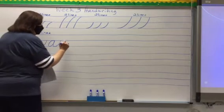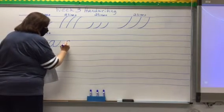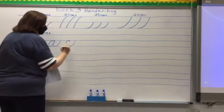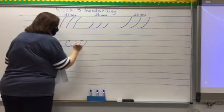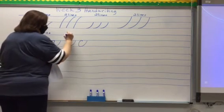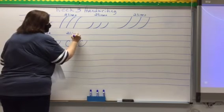A C also starts at the middle line. I drop down. I come around and do an under stroke. So this is a C. C does not start at the bottom line. Do two lines of C.